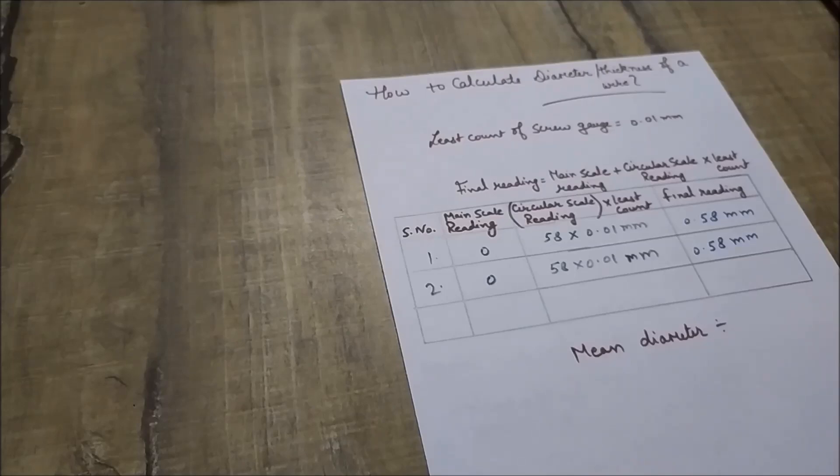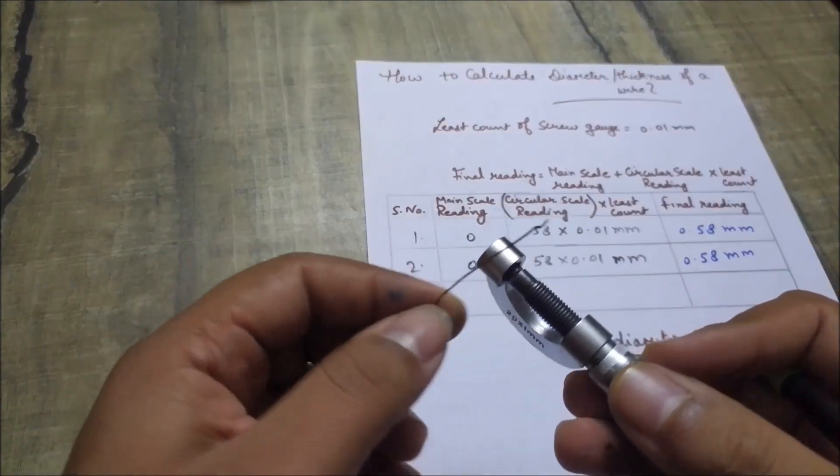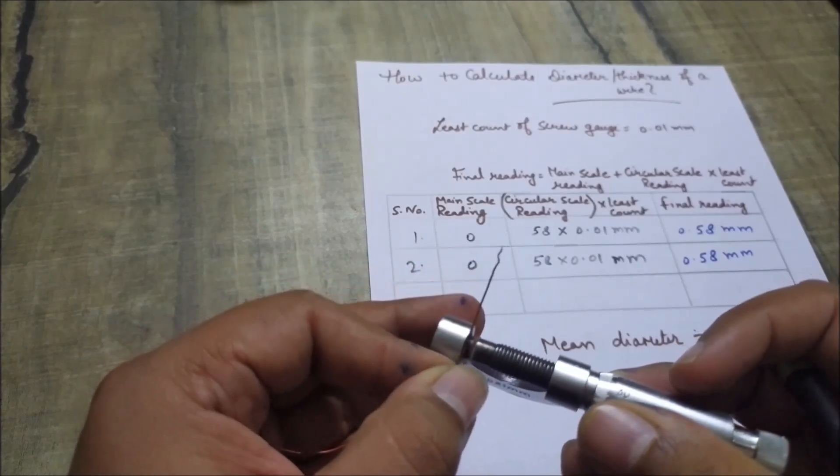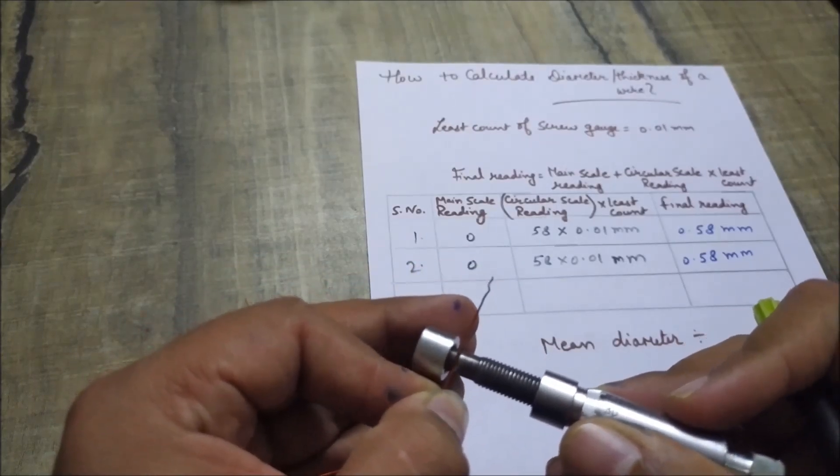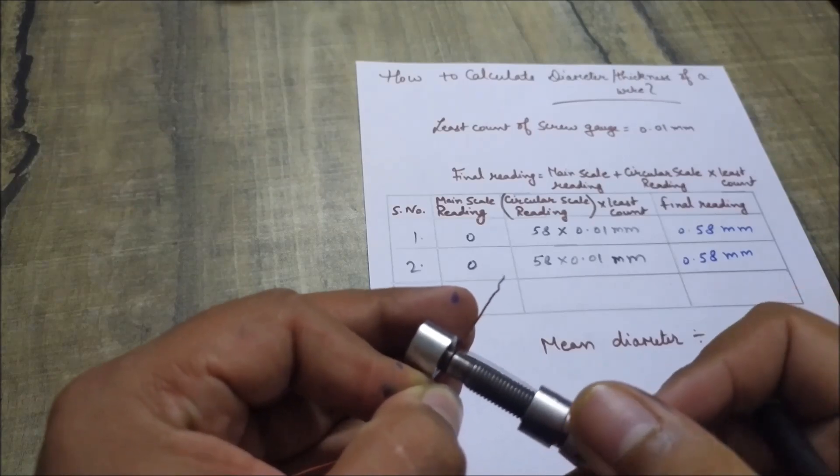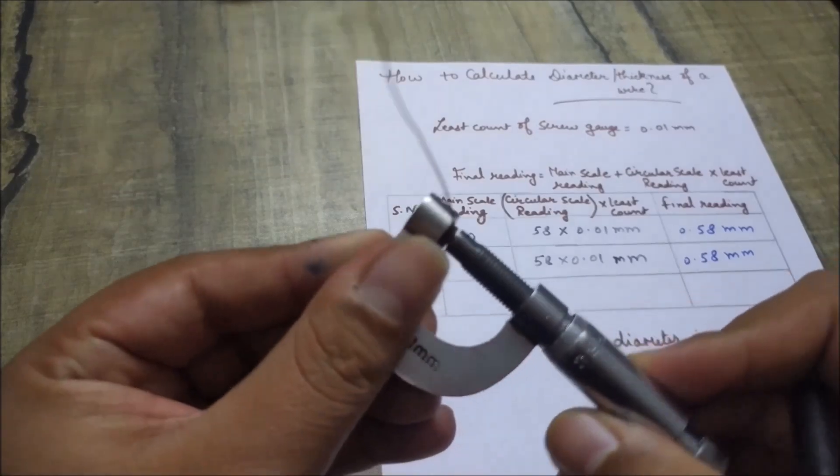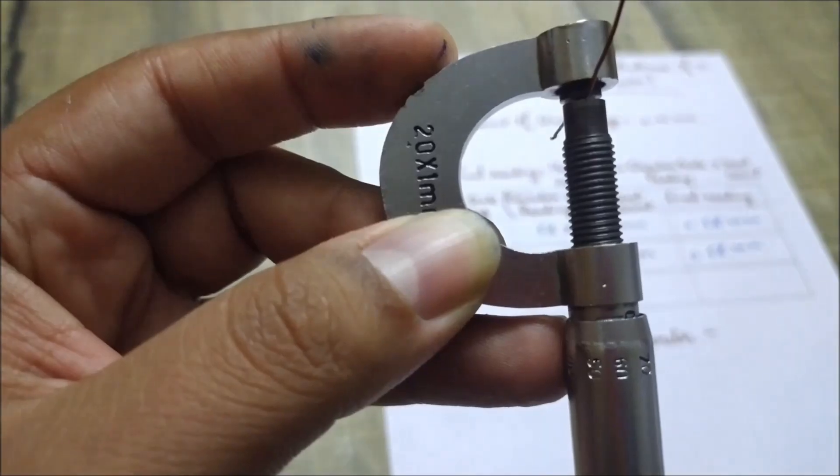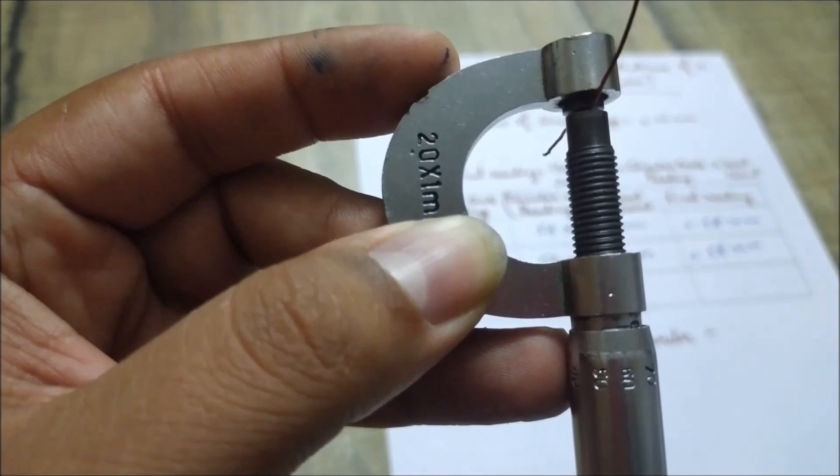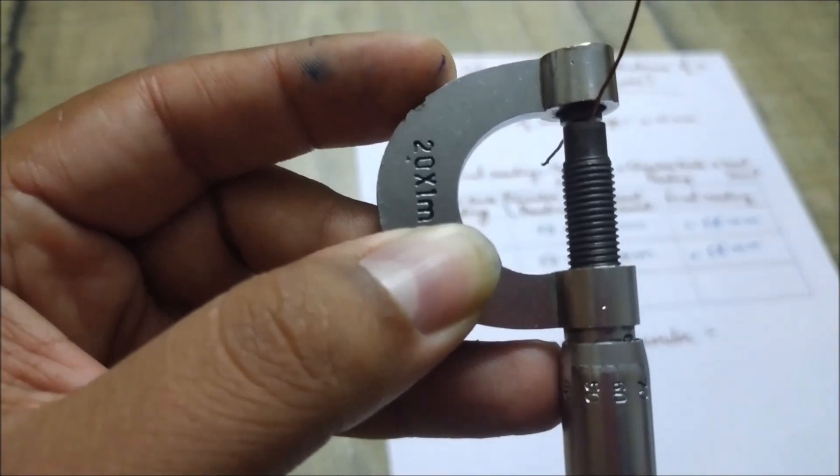Now we are proceeding for our third reading. Now again we will adjust the wire between spindle and anvil by changing the location where we are finding the thickness of wire. Now again we will take the reading on main scale. That is again 0. As 0th division on main scale is visible to you before circular scale, so your reading on main scale is 0.